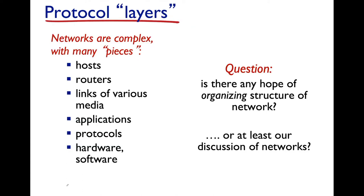Networks are fairly complex — there are a lot of moving parts. We talked about the hosts or end systems, the packet switchers, specifically the routers. We only mentioned switches but we'll talk about that in due time. We looked at different types of links: guided media and unguided media, each with different properties. We looked at ways of measuring delay, various applications, protocols, and hardware. We need to make sense of all these devices and organize them.